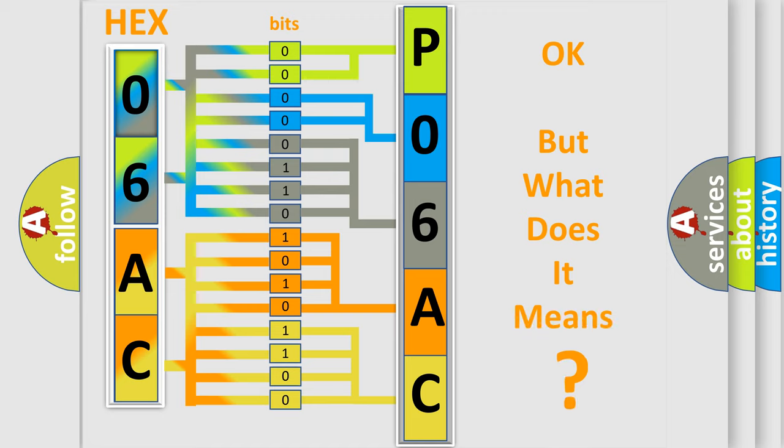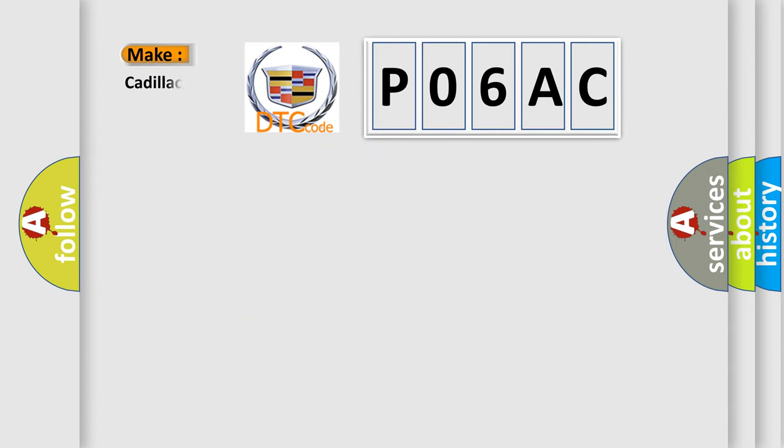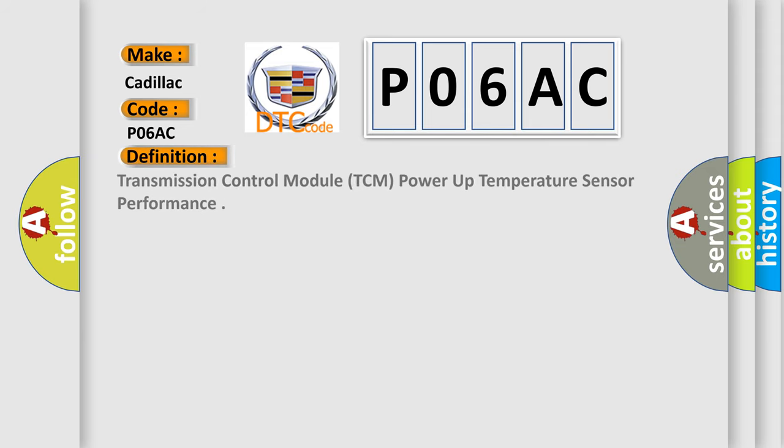The number itself does not make sense to us if we cannot assign information about what it actually expresses. So, what does the diagnostic trouble code P06AC interpret specifically for Cadillac car manufacturers? The basic definition is Transmission Control Module TCM power up temperature sensor performance.